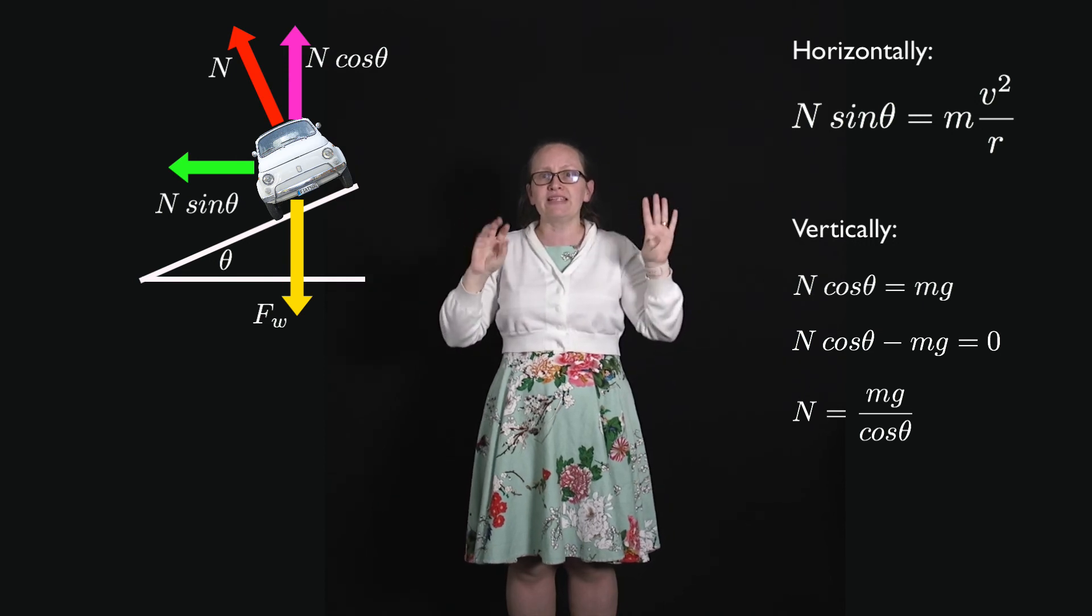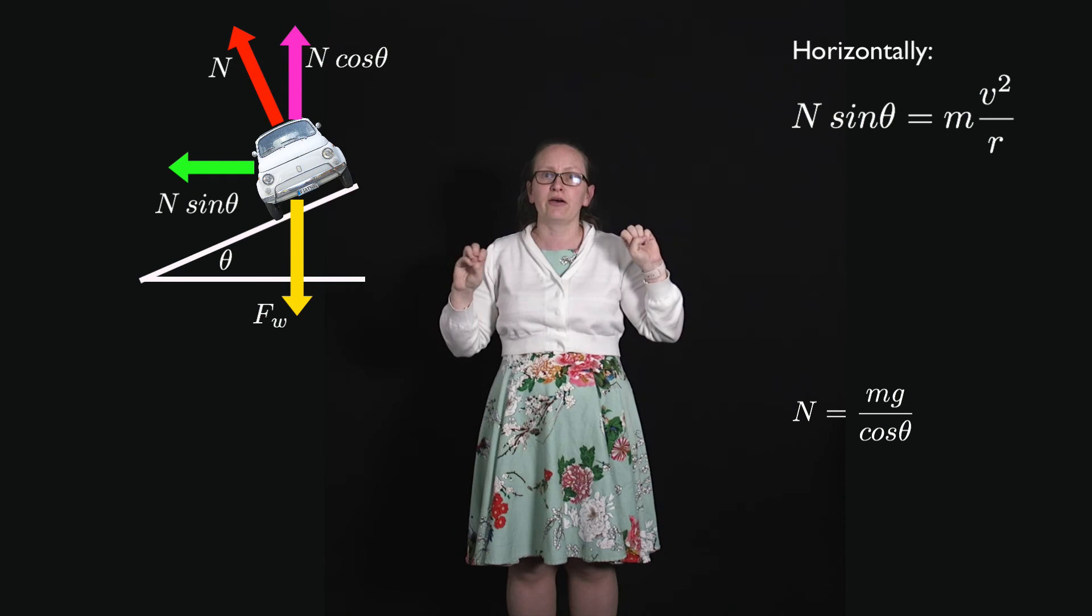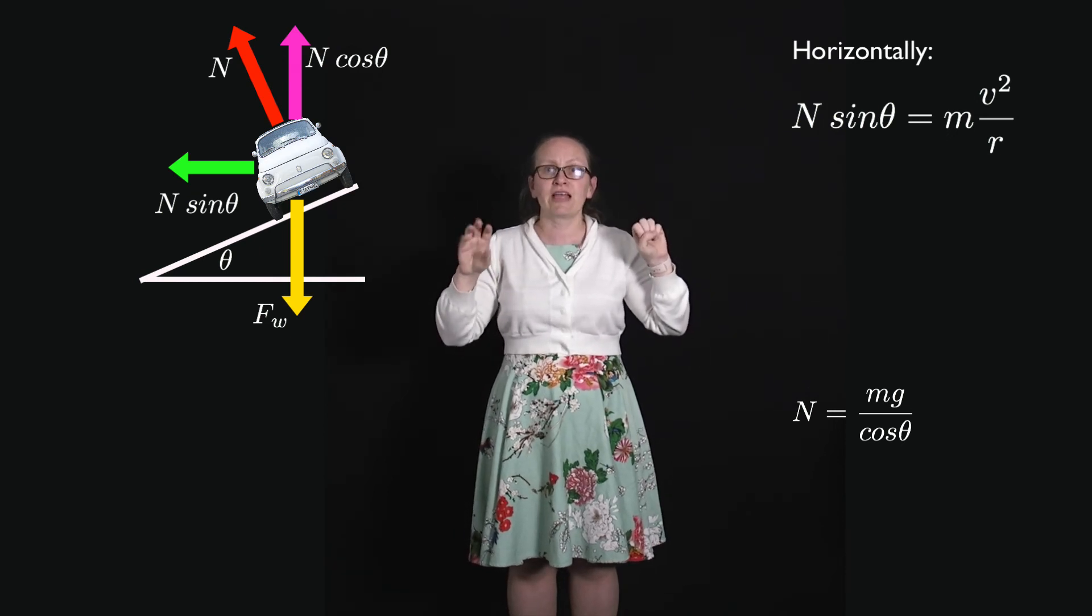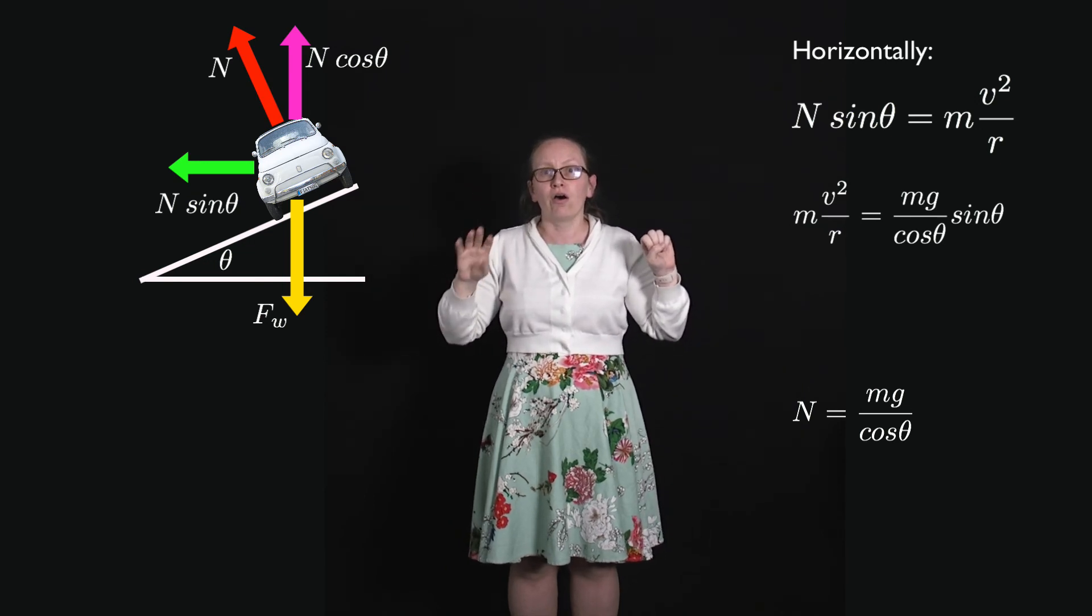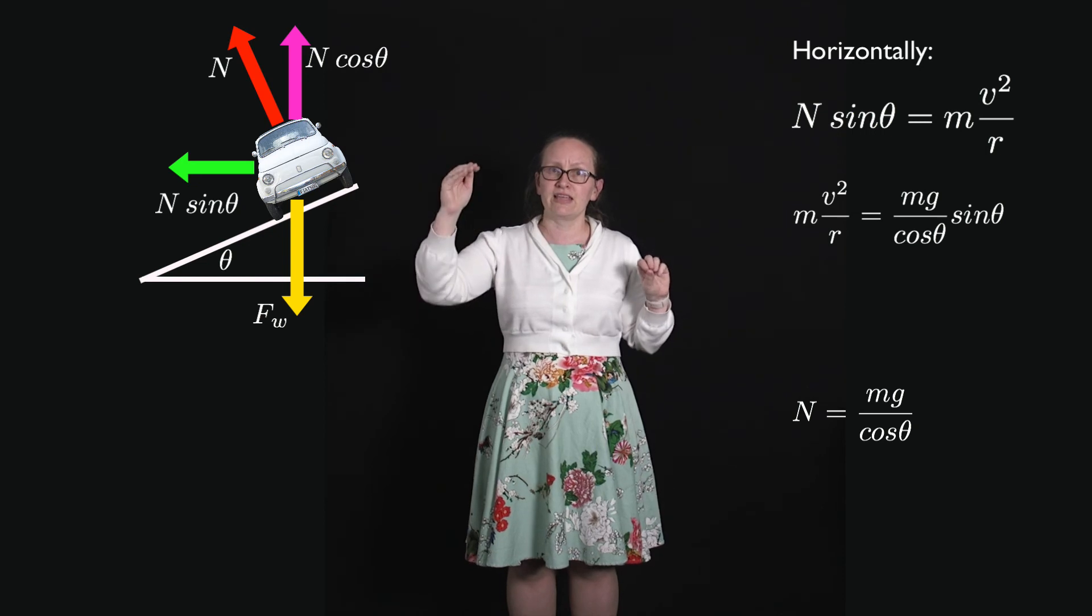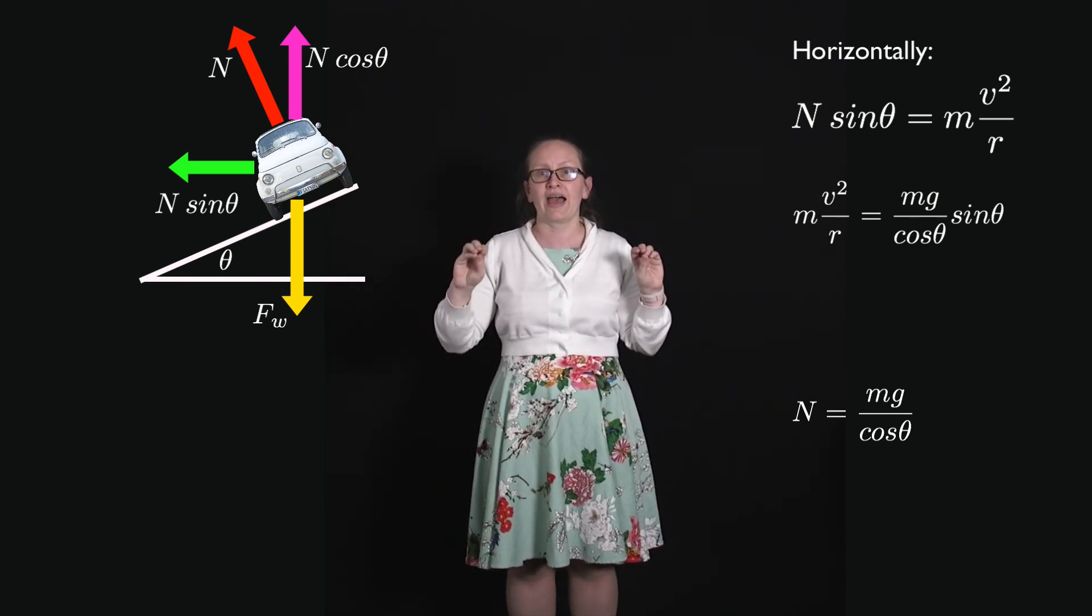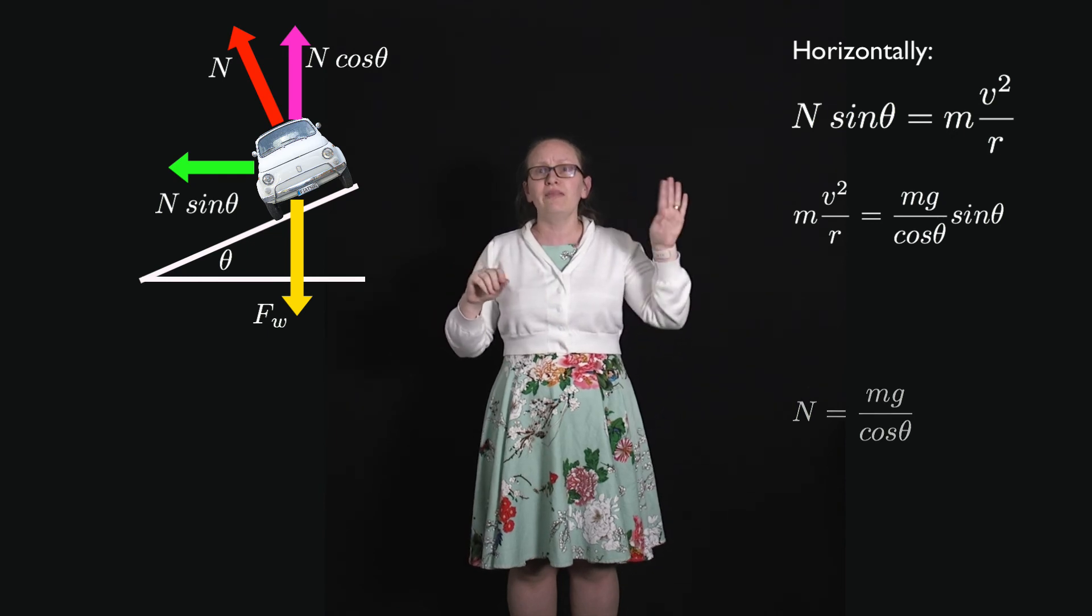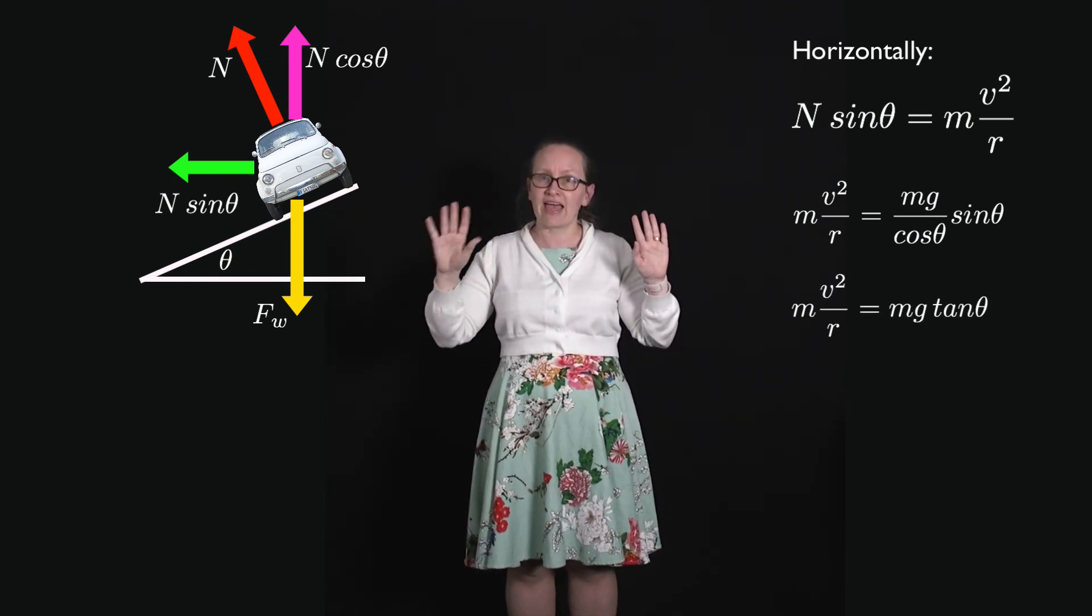Replacing N with this new expression mg over cos θ, we've now got mv²/r is equal to mg over cos θ times sin θ. Now sin θ divided by cos θ is just tan θ. So we have mv²/r is equal to mg tan θ.